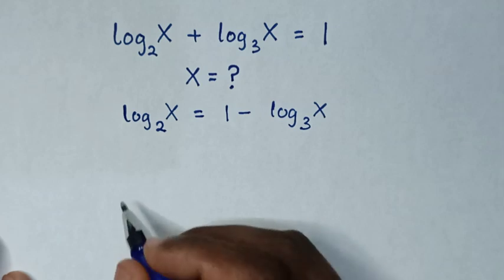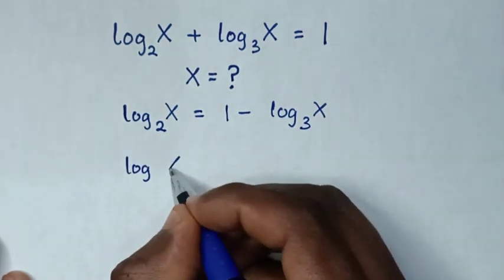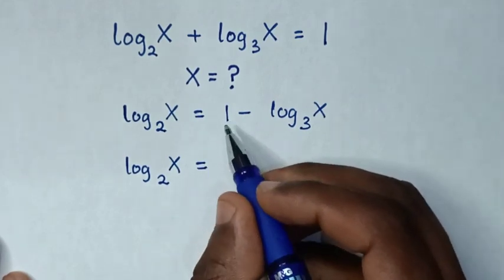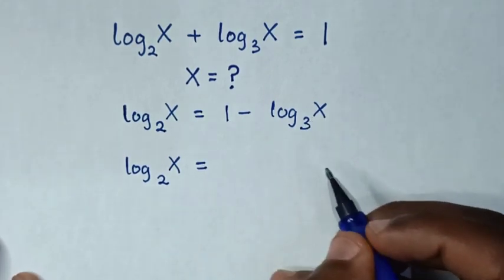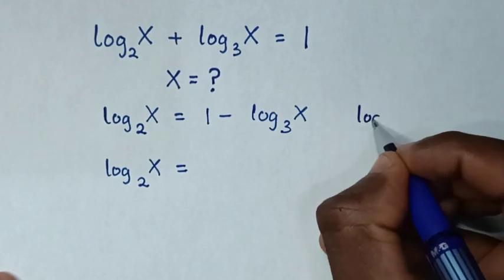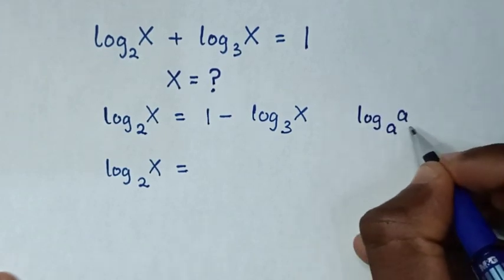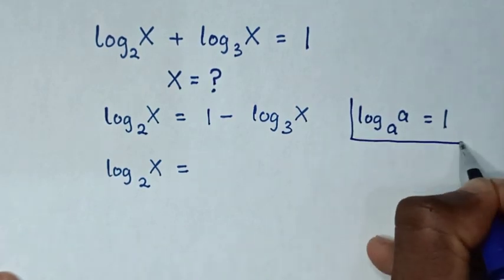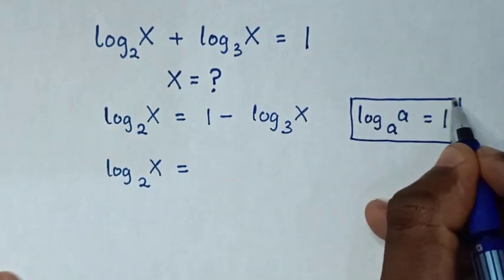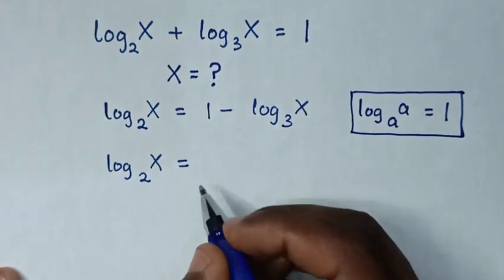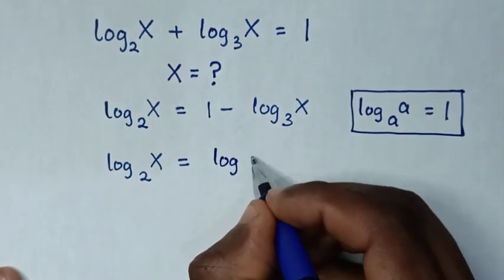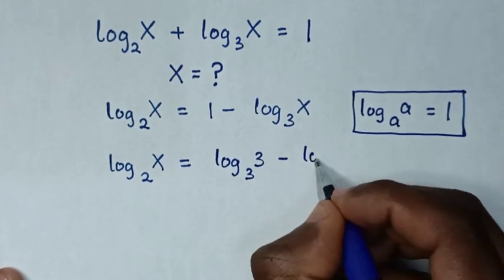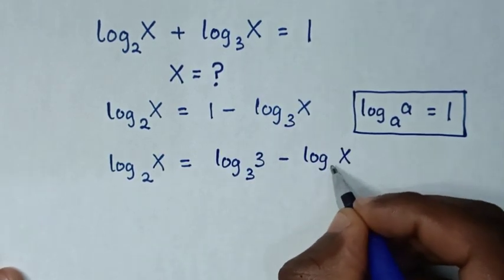In the next step, log of x base 2 is equal to — for 1 to have the same base of 3, we apply the rule that log of a base a is equal to 1. So it will be log of 3 base 3, then minus log of x base 3.